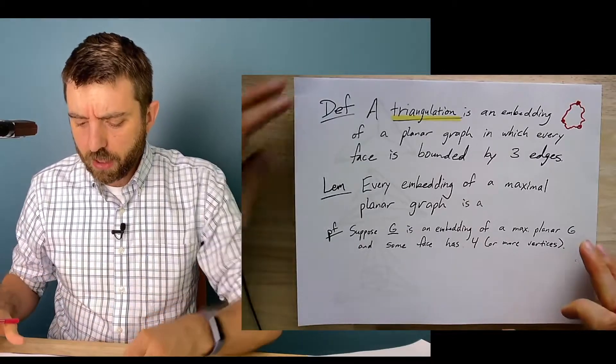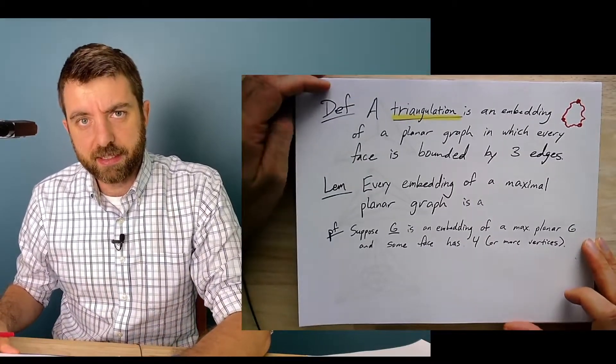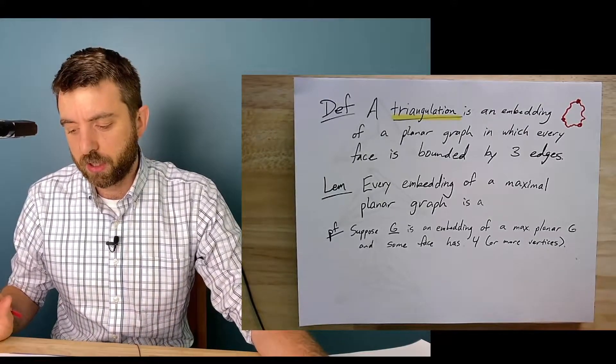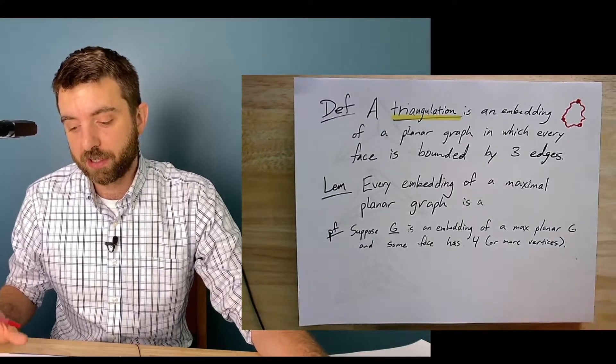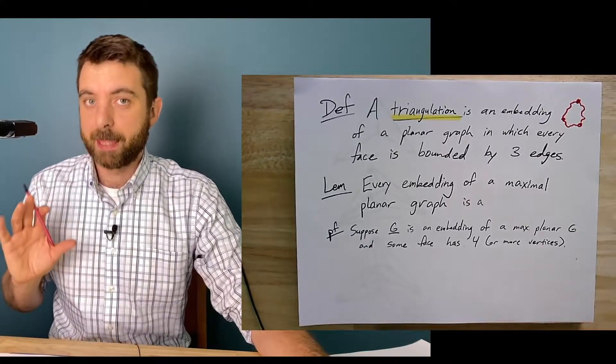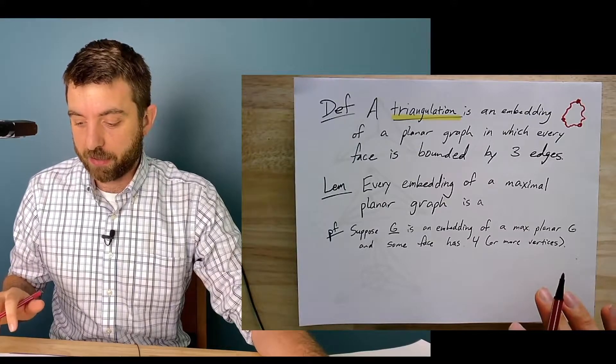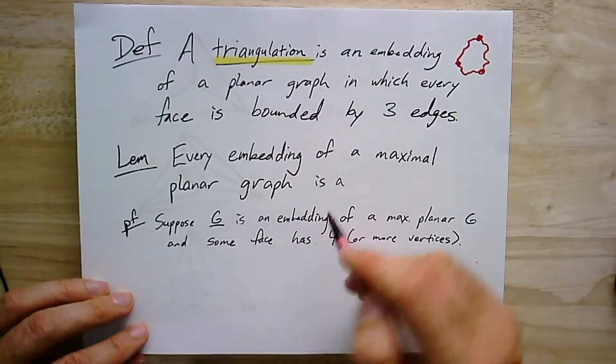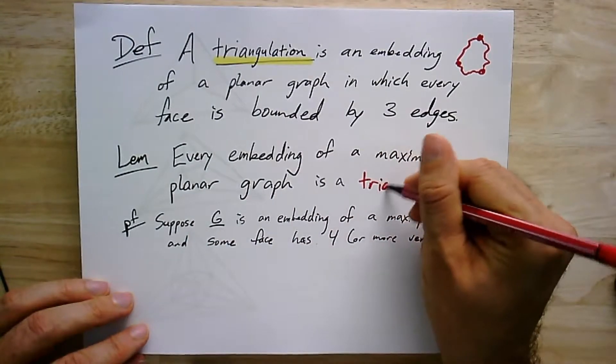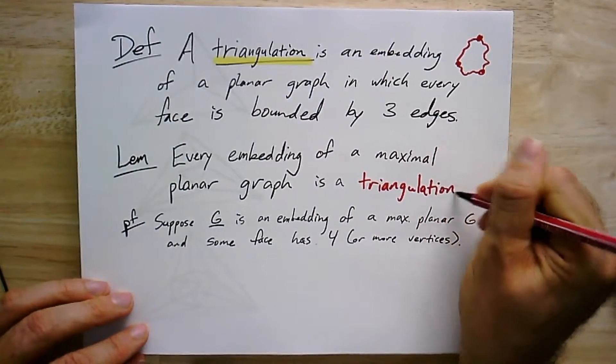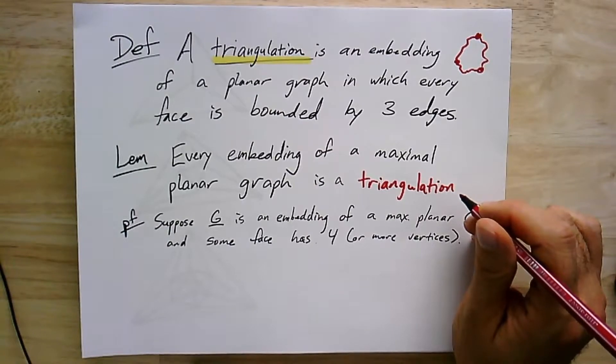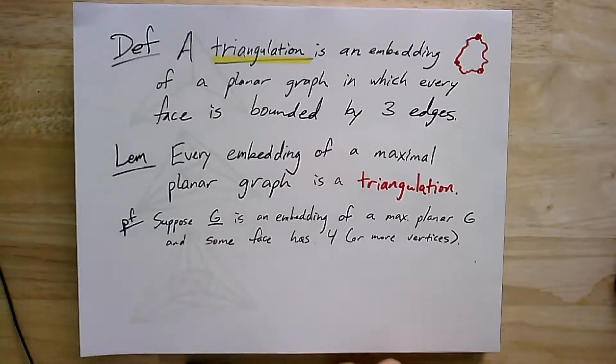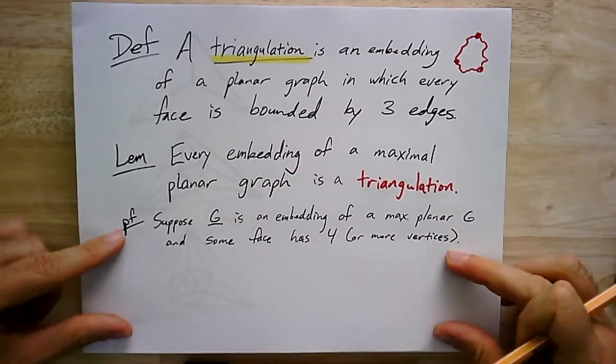Now if I have an embedding of a planar graph where all the faces are triangles, we're going to call that a triangulation. And this is going to be more or less equivalent to being maximal. So remember, maximal is a notion for graphs. Triangulation is a notion for the embeddings of those graphs. But the following lemma kind of connects them. So if you have any, really every embedding of a maximal planar graph is a triangulation. The converse of this is true as well, like if the embedding of a graph is a triangulation, then it's maximal. But I'll leave that as an exercise.